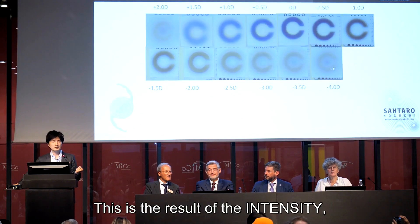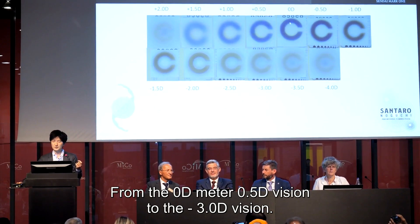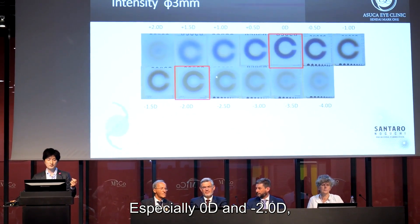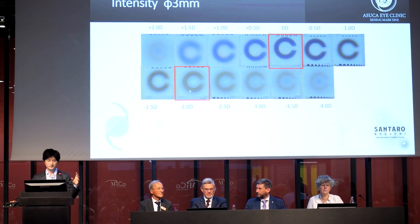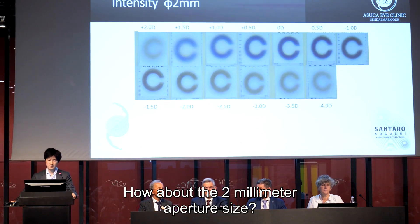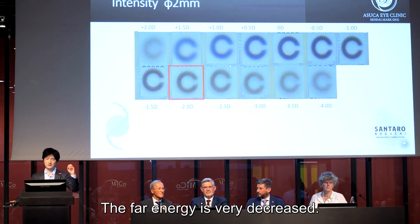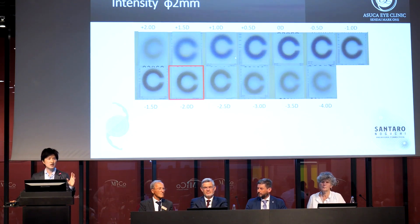This is the result of the Intensity with 3mm aperture size. I'm surprised about it, because it has very good continuous clear vision from 0 diopters — far vision — to minus 3.0 diopters. Especially 0 delta and minus 2.0 have very good high light energy. The 4mm and 2mm aperture sizes are very different from the 3mm aperture size. At 2mm, energy power is very decreased, and near around minus 2.0 the depth is very high.